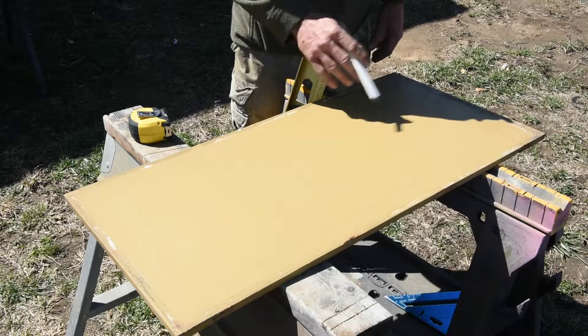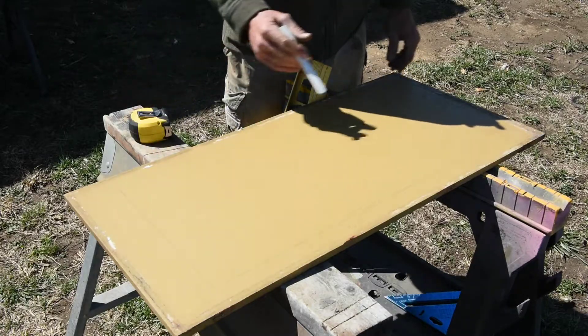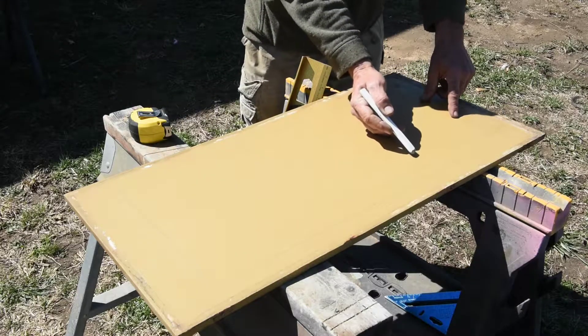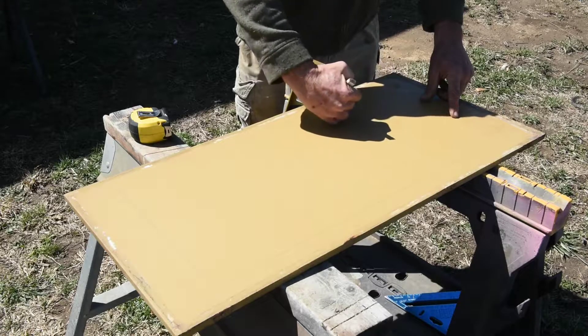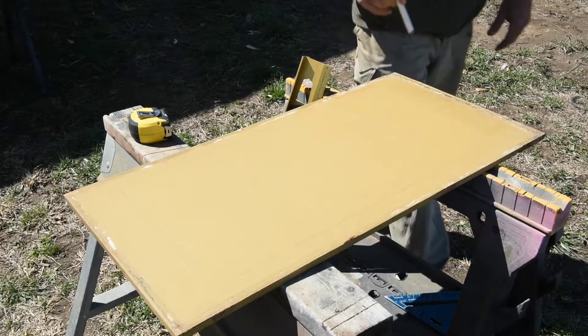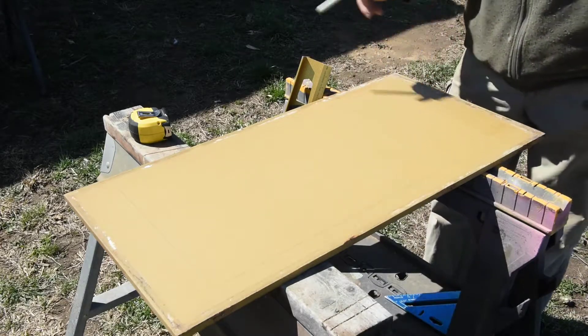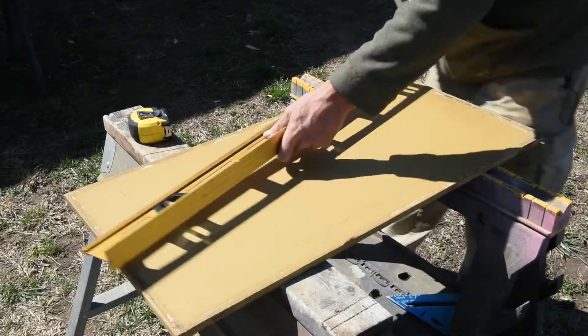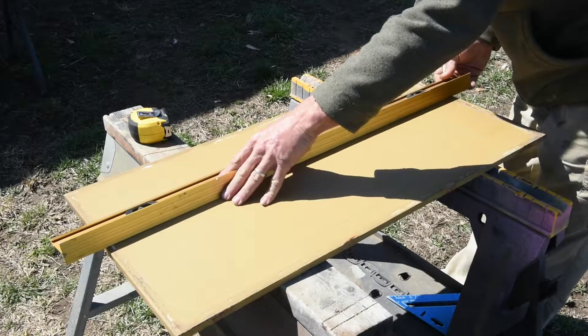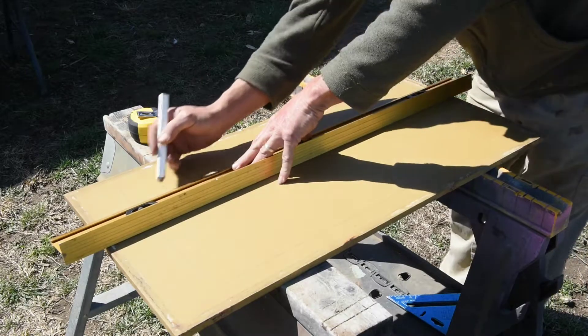Before I mark my lines, I think I want to do some kind of curve. Instead of cutting it straight across square, I'm going to go ahead and make my marks lengthways so I know where to cut on them.